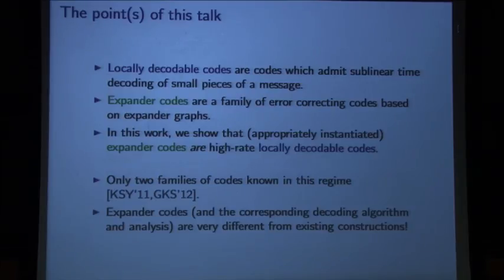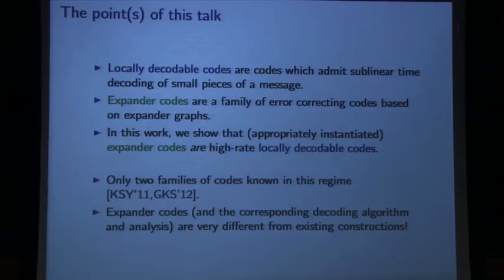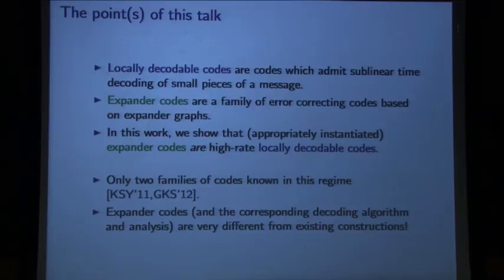As Avi was saying, this is the third work that sort of does this. It uses kind of different techniques, but for locally decodable codes with rate approaching one and sublinear time decoding, the first construction was in 2011 — these multiplicity codes of Kopparty, Safra, and Yekhanin — and then the affine invariant codes of Guo-Kopparty-Sudan. This is a kind of different technique.